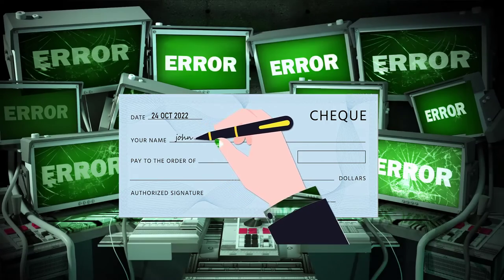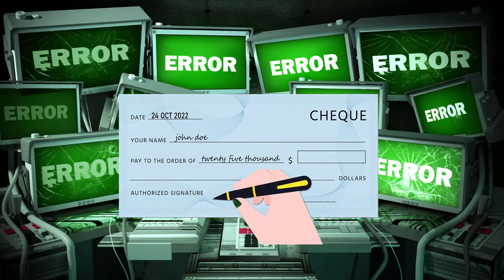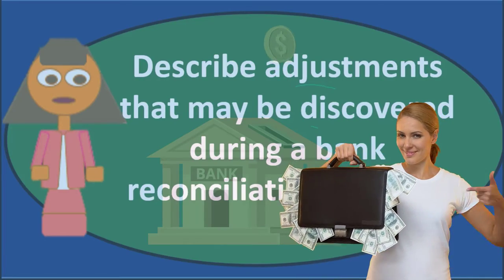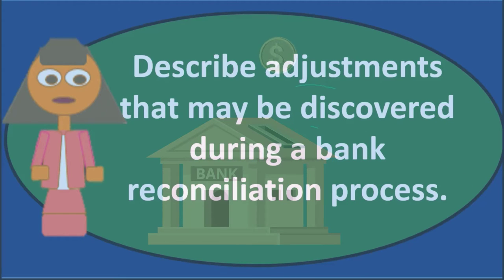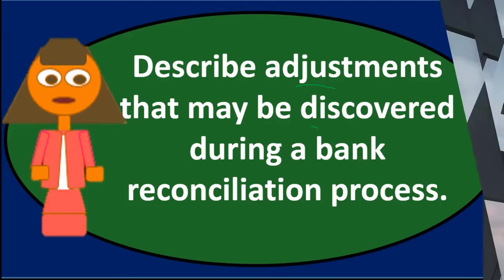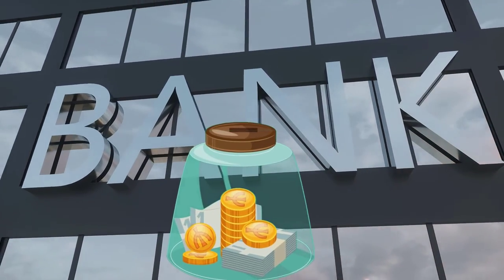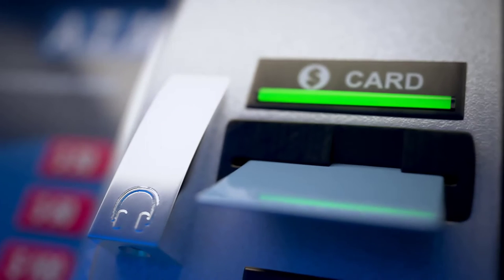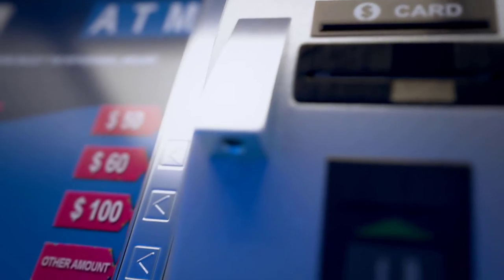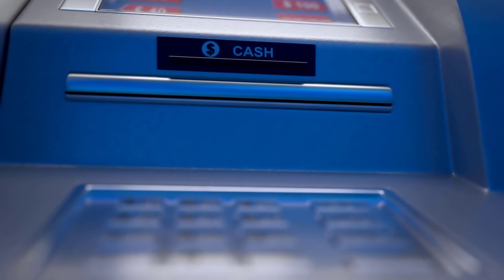If there are errors in the recording of checks — for example, we wrote a check for $150 but recorded it at $100 — we'll need to make an adjustment. The bank would typically be correct since that's how much money actually came out. So we'd credit the checking account and debit $50 to the appropriate account, depending on what the payment was for — accounts payable if we were paying a vendor, or an expense account if it was an expense payment.